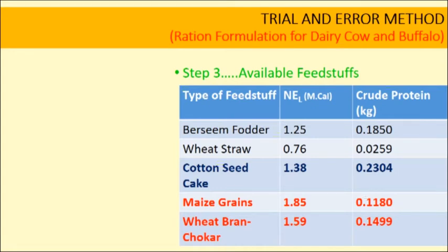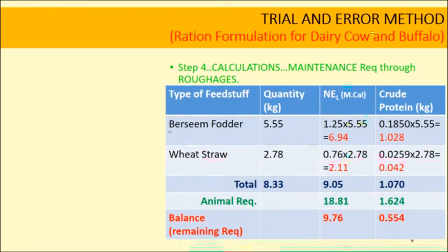After calculating nutrients provided by roughages, the balance remaining is: 18.81 minus 9.05 equals 9.76 Mcal energy, and 1.624 minus 1.07 equals 0.554 kg protein. These values represent the remaining nutrient requirement that must be provided from the concentrate portion of the ration.